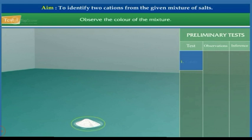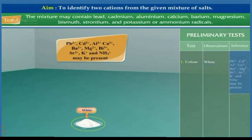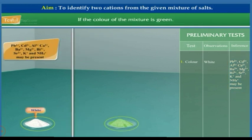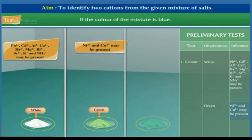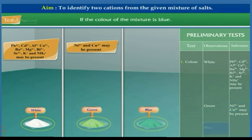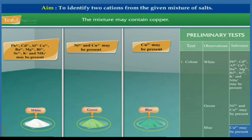Test 1: Observe the color of the mixture. If the color of the mixture is white, the mixture may contain lead, cadmium, aluminium, calcium, barium, magnesium, bismuth, strontium, and potassium or ammonium radicals. If the color of the mixture is green, the mixture may contain nickel or copper radicals. If the color of the mixture is blue, the mixture may contain copper.